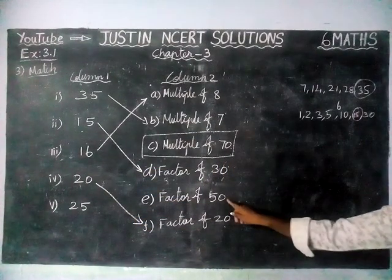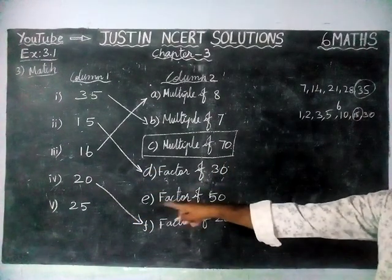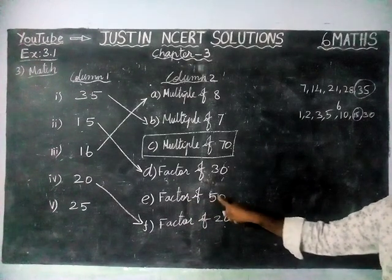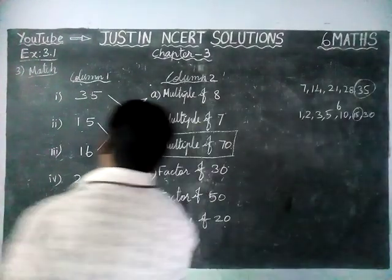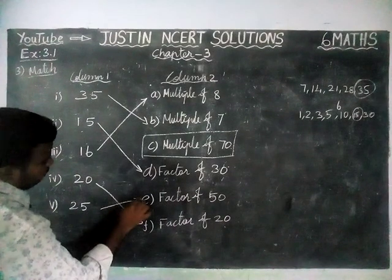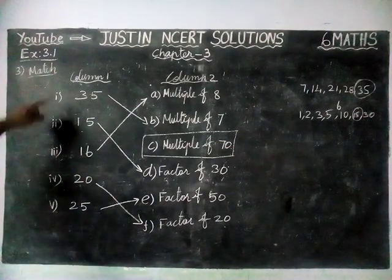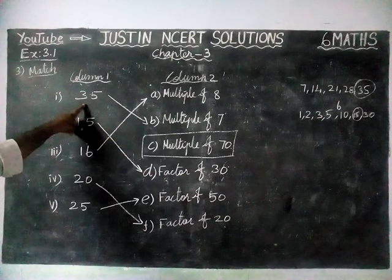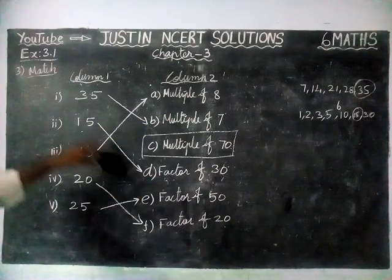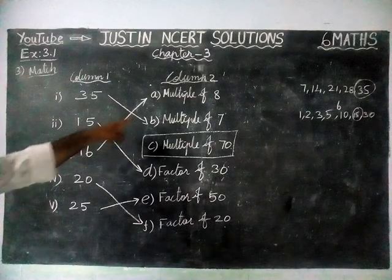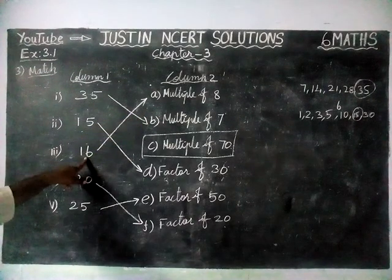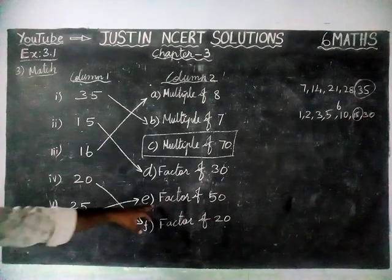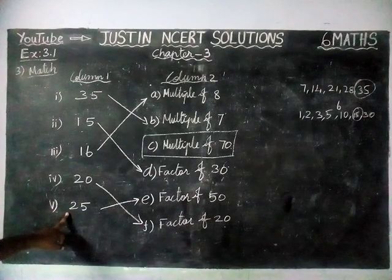The remaining number is 25, and the remaining option is factor of 50. Yes, two 25s are 50, so 25 is a factor of 50. Therefore, the fifth question answer is option E. Summary: 35 is a multiple of 7, 15 is a factor of 30, 16 is a multiple of 8, 20 is a factor of 20, and 25 is a factor of 50.